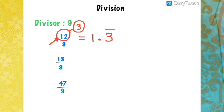Another example: 18 divided by 9. Add 1 plus 8, which gives 9. When the sum is exactly 9, take the first digit (1) and add 1 to it, giving 2. Since the sum is exactly 9, there is no decimal value. Therefore 18 divided by 9 is 2.